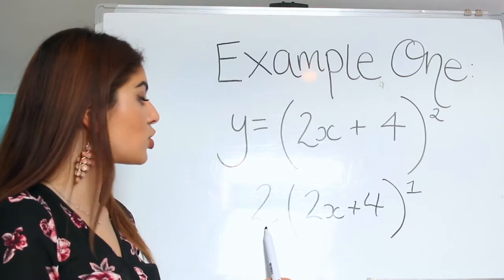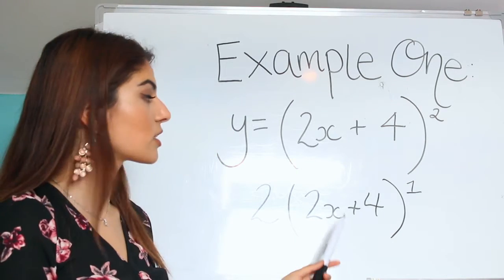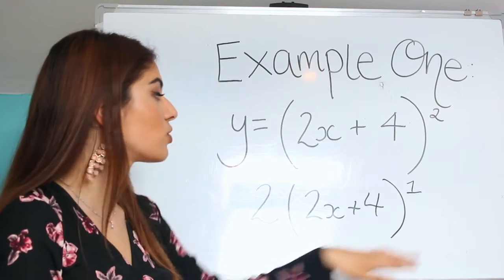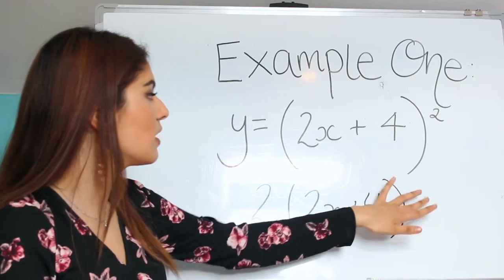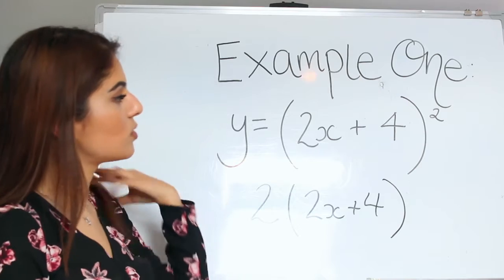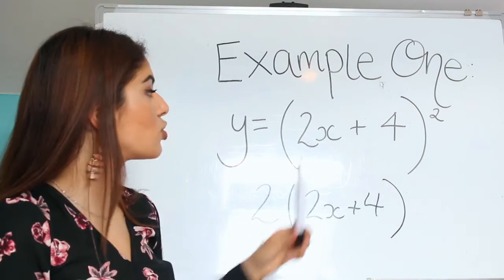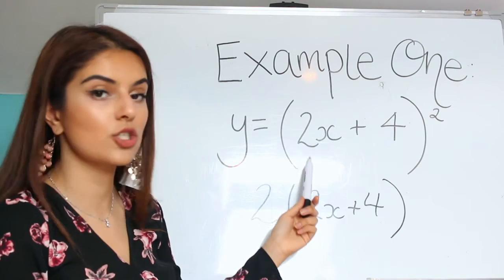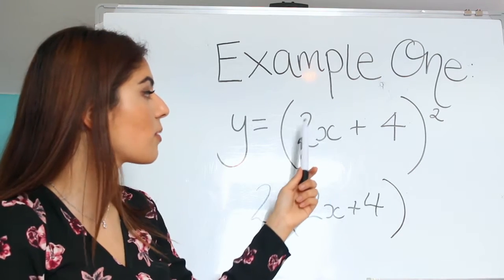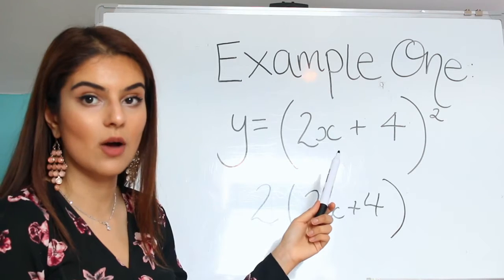Our first thing would be 2 times 2x plus 4. And the 1 would just cancel out. And now what we would do is we would differentiate the 2x plus 4, so the inner part. The 2x would just become a 2 because you times it by the power and we reduce that power so the x would go.